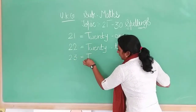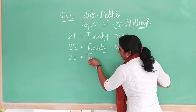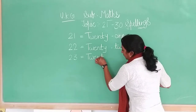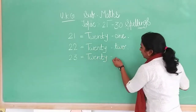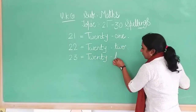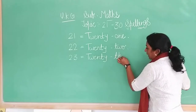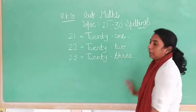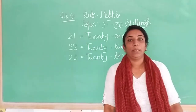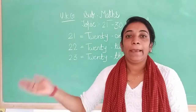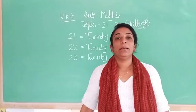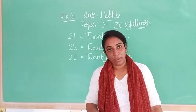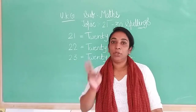Twenty: T, W, E, N, T, Y. Then three: T, H, R, E, E. Twenty-three. 23. After 23 comes 24.